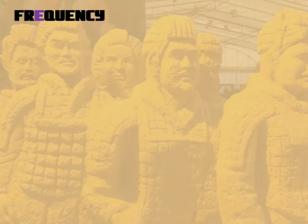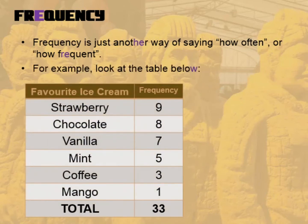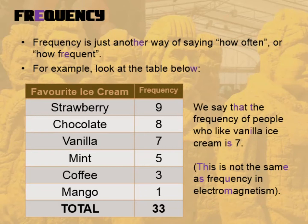Frequency is one of the earliest statistical terms from maths, and it's literally just another way of saying how often or how frequent something is — how many times you see it. So it's just another way of talking about quantity. Looking at the table, this is a class of 33 students and we asked them about their favorite ice cream. Strawberry has a frequency of nine; the frequency of people who like vanilla is seven. Remember, this is not the same as electromagnetic frequency — this is statistical frequency, and although the meanings are connected, they are very much not the same.